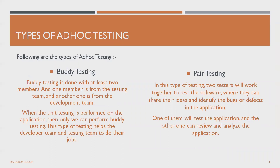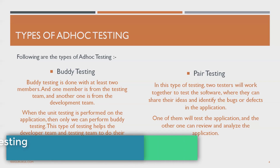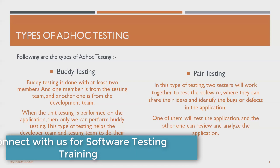In buddy testing, two persons — a developer and a tester — are involved in testing the complete product. They generally focus on the main functionality of the application. For example, in WhatsApp, there are five major components: messenger, audio calling, video calling, settings, and payment gateway. When ad hoc testing starts, the person involved verifies all five major functionalities rather than going into deep detail.